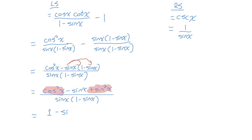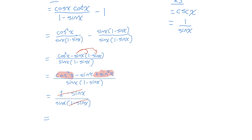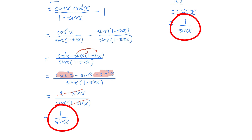So in the numerator I just have 1 minus sine x. I can cancel out that whole factor of (1 minus sine x) in the numerator with the factor of (1 minus sine x) in the denominator — something divided by itself is one. So I'm left with 1 in the numerator and sine x in the denominator. That's exactly the same as the right side of the equation — this equation is an identity, it's been proven.